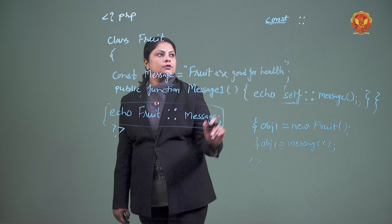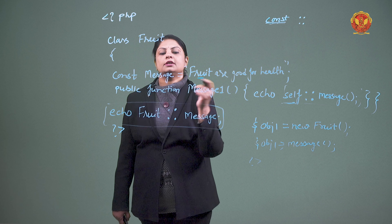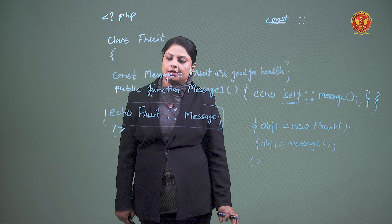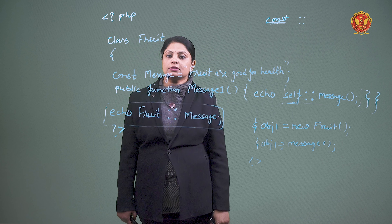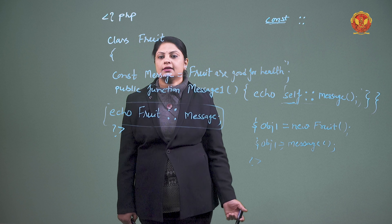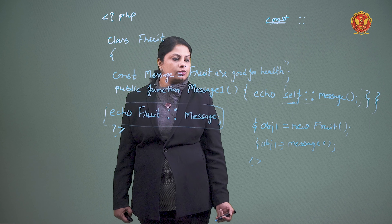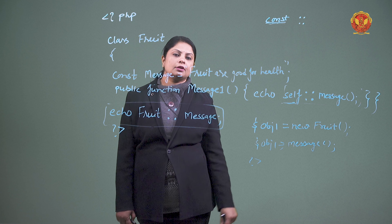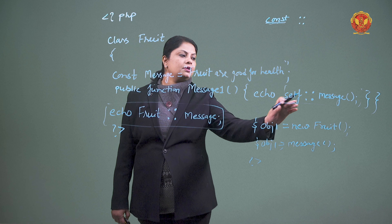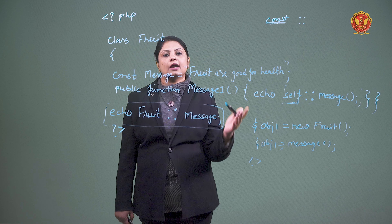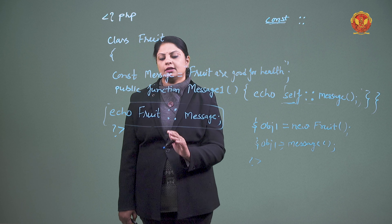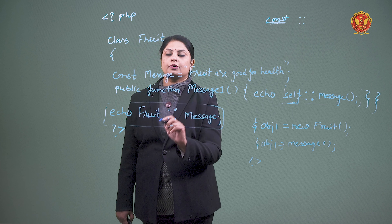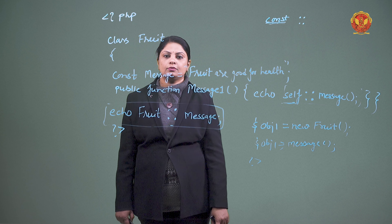This is the use of constant data. You can define it in a class, and you can access it inside the class and outside the class. Inside the class, we use the self keyword with the scope resolution operator. Outside the class, we use the class name with the scope resolution operator. Thank you.